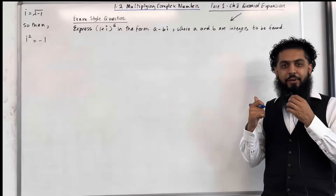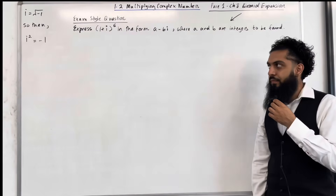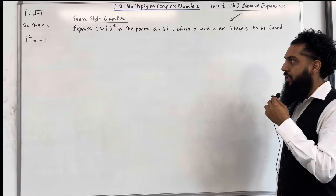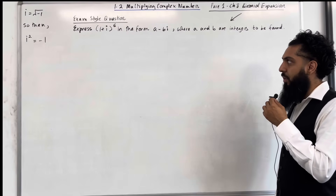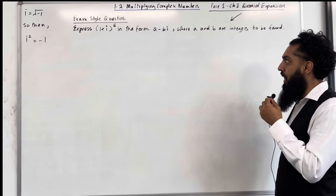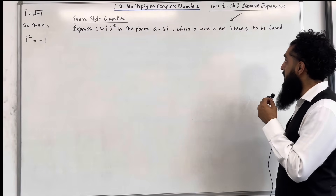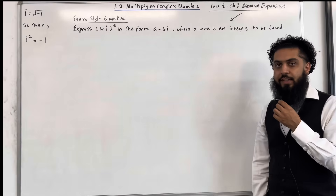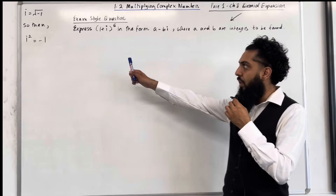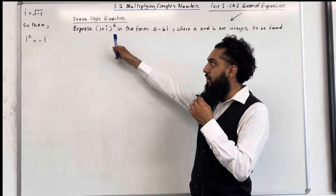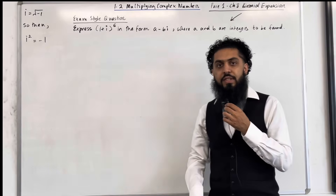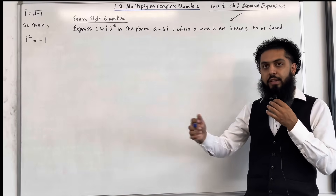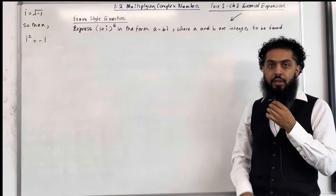Here is another exam style question. Express (1 + i) to the power 6 in the form a minus bi, where a and b are integers to be found. Expanding (1 + i)^6 basically means opening it up into 6 brackets of (1 + i) and expanding each, but this is going to take a long time.